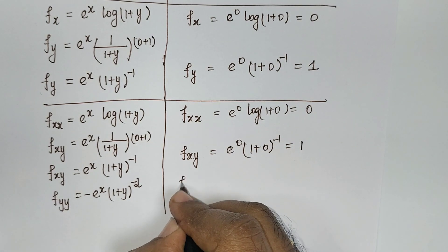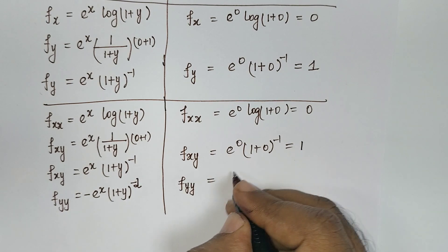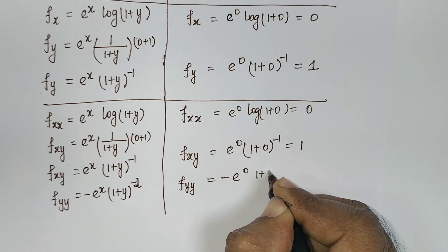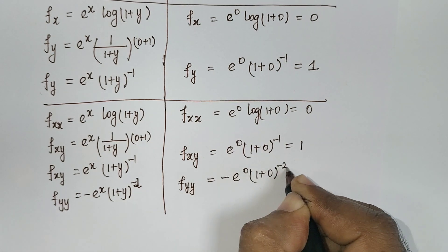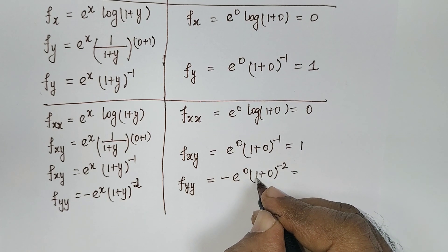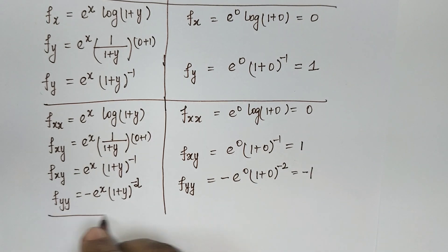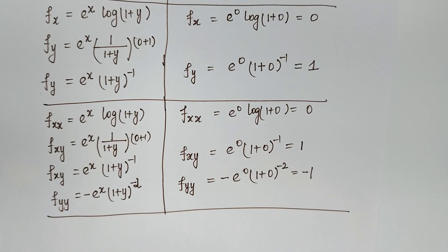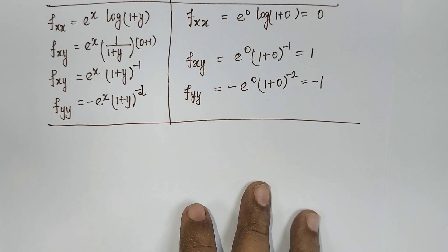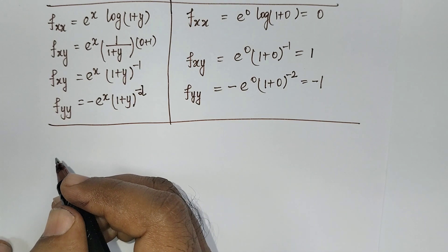So your second degree values are: fxx = 0, fxy = 1, fyy = −1. This is the second degree — very simple. You should understand the concept of how to partially differentiate the term for first degree, second degree, and third degree.